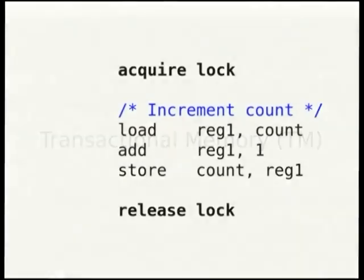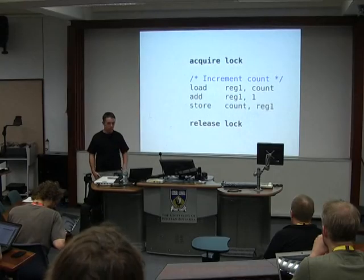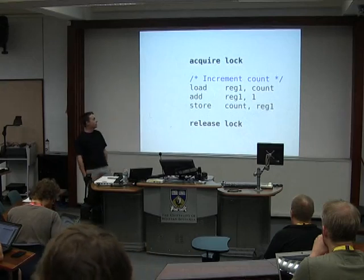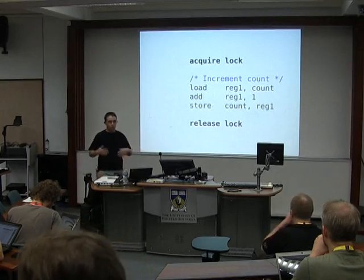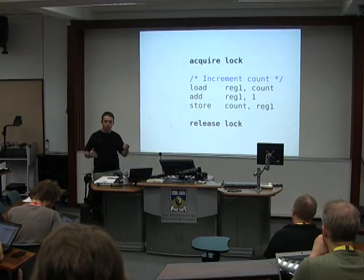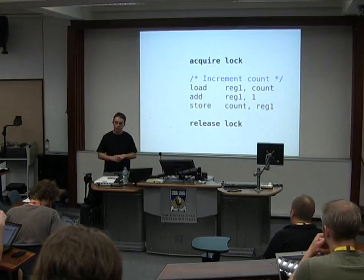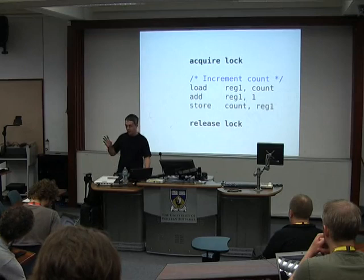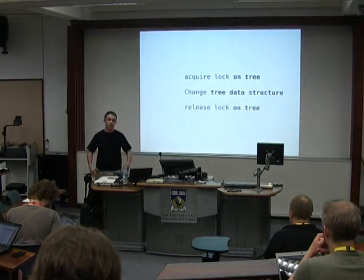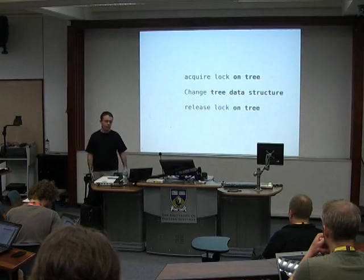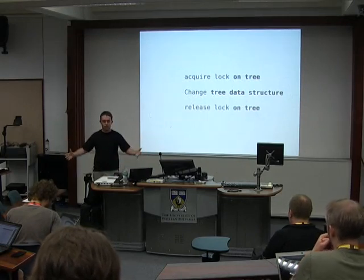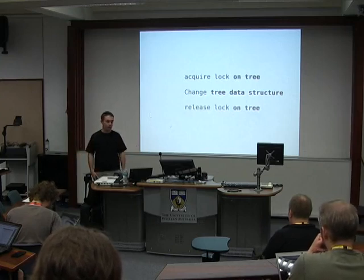So, transactional memory. If you've got a multiprocessor system and you need to do something like increment a count — this is sort of pseudo assembler — you need to provide some sort of mutual exclusion when you're accessing or writing variables. Here we've got a load-add-store, just incrementing a value count. You can't do this on multiple processors at the same time without mutual exclusion, so at the top we've got an acquire lock and at the bottom we release the lock.